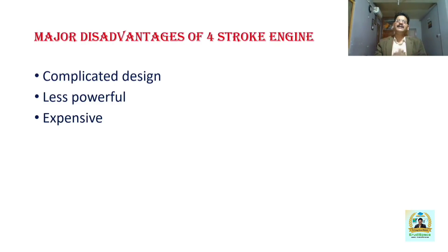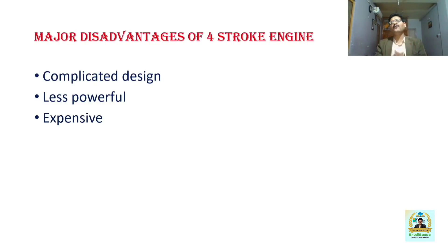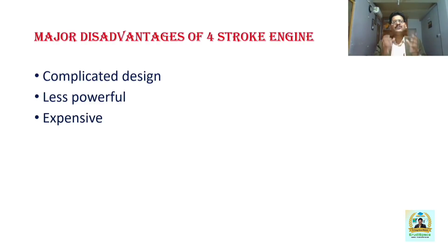Now the disadvantages of four-stroke engines in comparison with the two-stroke cycle engine. They are complicated in design. In a four-stroke engine, we have valve arrangements, whereas in a two-stroke cycle engine, you have a port arrangement — the entry of the fuel-air mixture or the removal of burnt mixture is due to the covering or uncovering of ports by the piston, so there are no valves. In four-stroke engines, the valves must be operated by an actuating mechanism, which definitely makes the four-stroke engine more complicated.